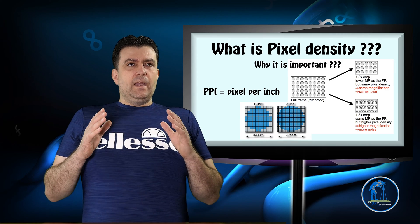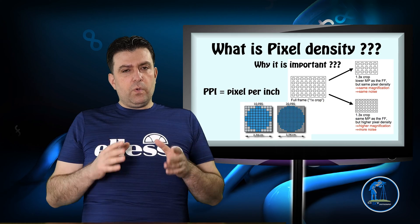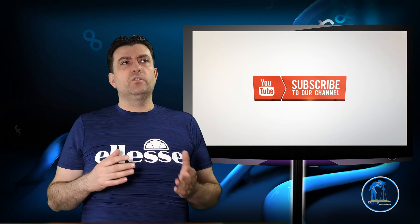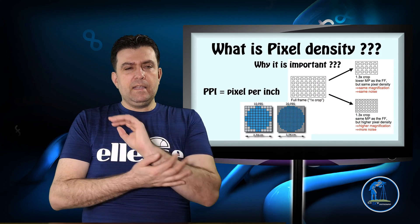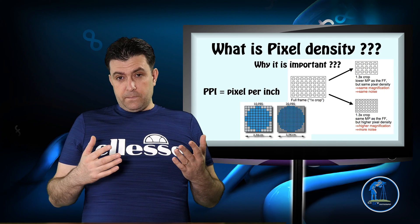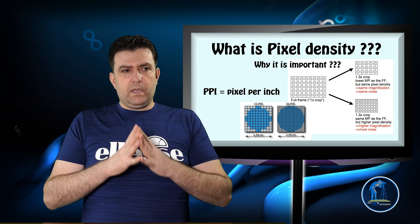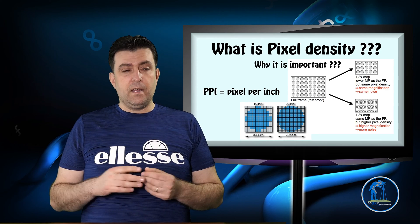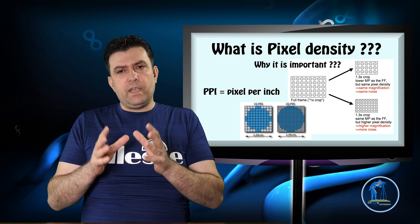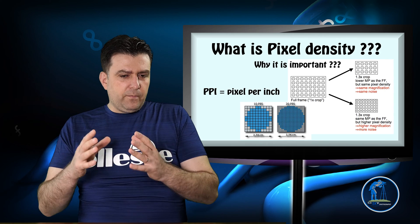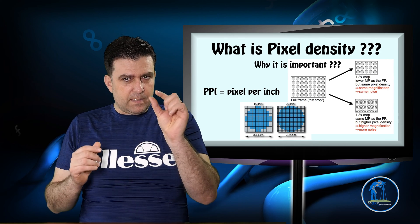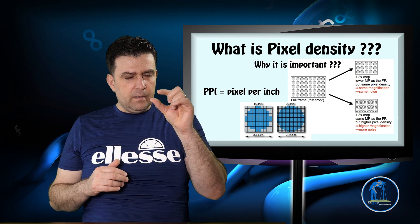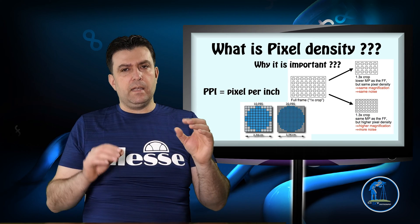Why is pixel density important? It really depends on what kind of photography you do. For wildlife or sports photographers, pixel density is important — a 24 megapixel APS-C sensor captures more detail because of its higher pixel density. However, you have to understand that low light capability will be less because the pixel size is smaller. A full-frame 24 megapixel sensor is better in low light, but won't contain as much detail as the 24 megapixel APS-C sensor.